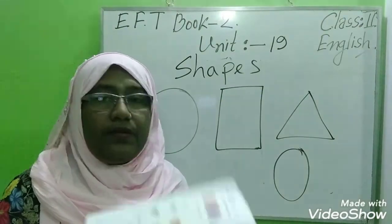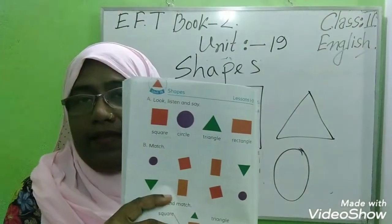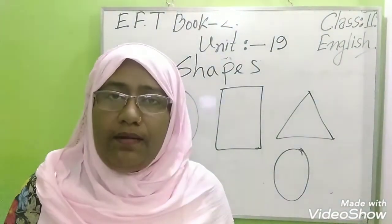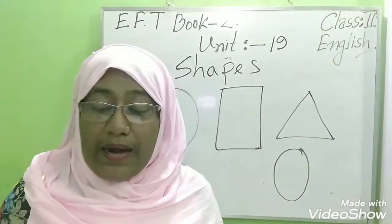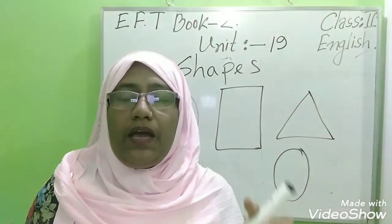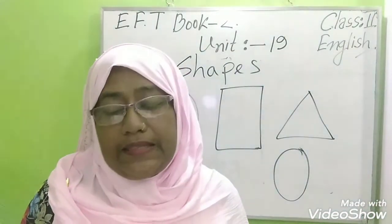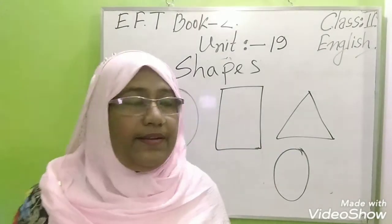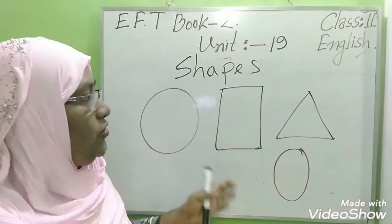These four types of shapes we can see here. The first one is square — that means every four sides are equal. Then the circle, triangle, and rectangle. Rectangle is longer on one side and shorter on the other.